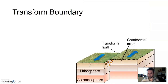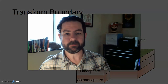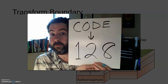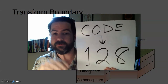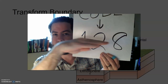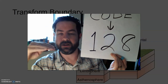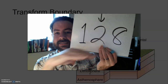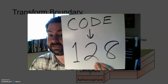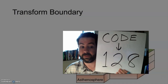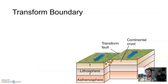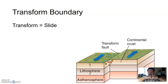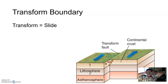What's left are transform boundaries. Transform boundaries slide — plates grind horizontally past one another. They're not crashing into one another and they're not pulling apart; they're just grinding side by side. So: convergent, collide; divergent, divide; transform, slide.